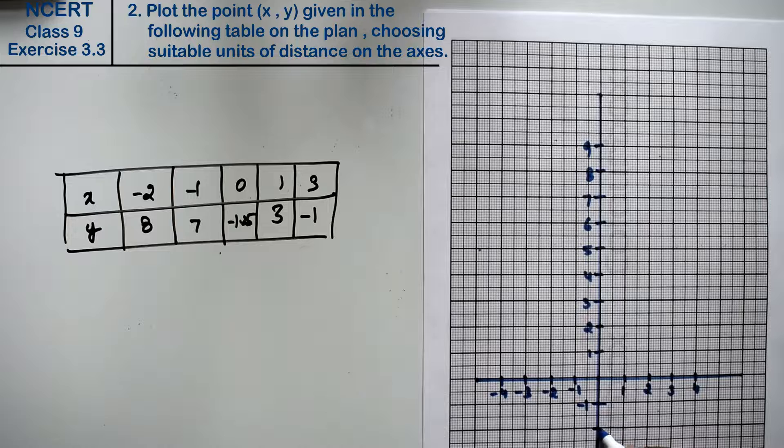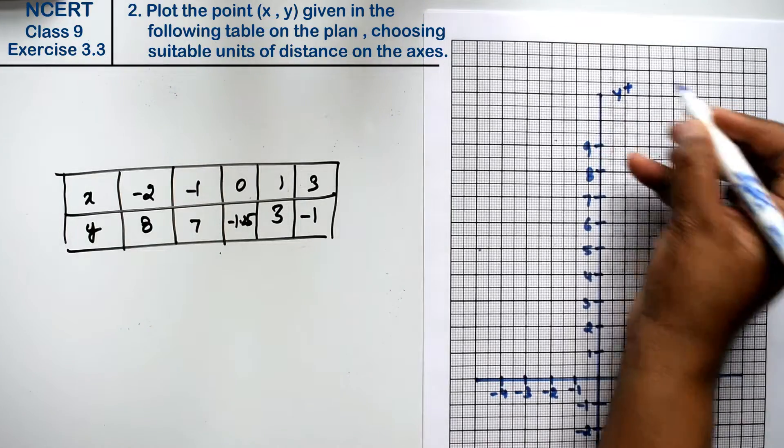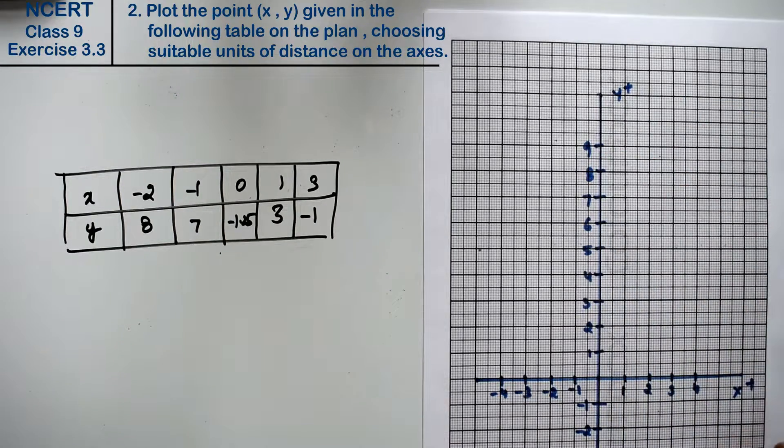Minus 1, minus 2, minus 3, right friends. This is y negative, y positive, x positive, x negative, right. Now we will plot the points.